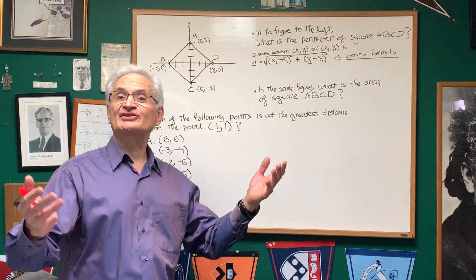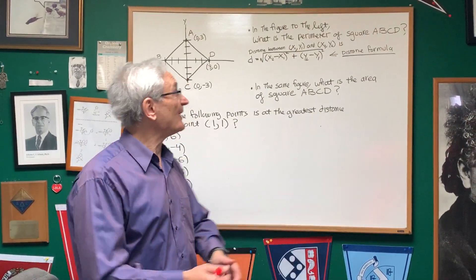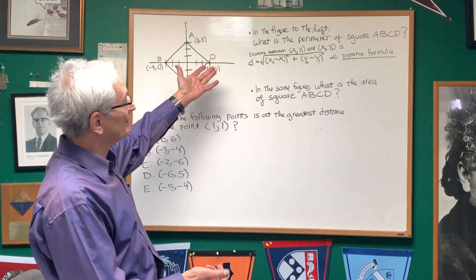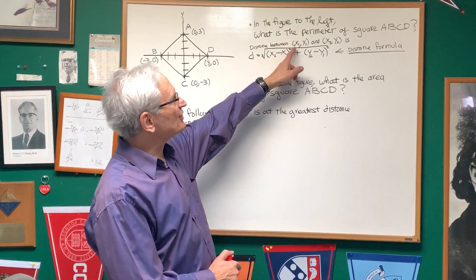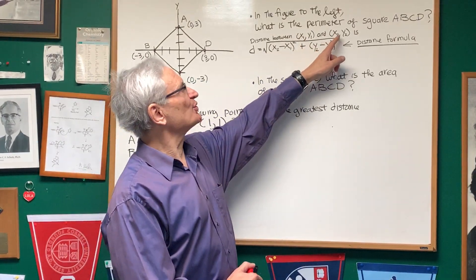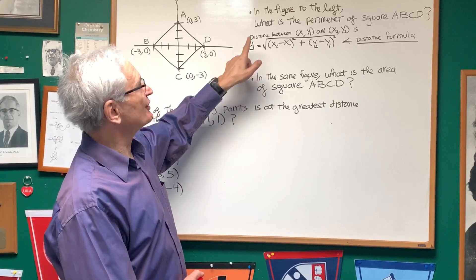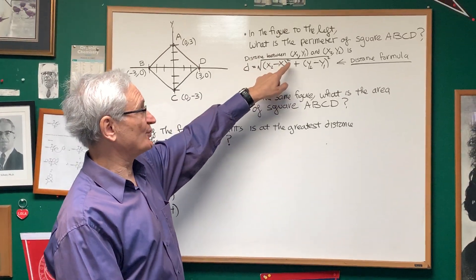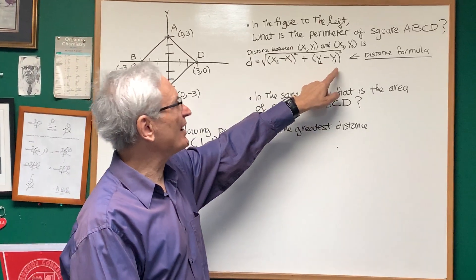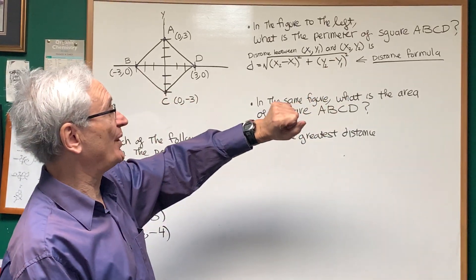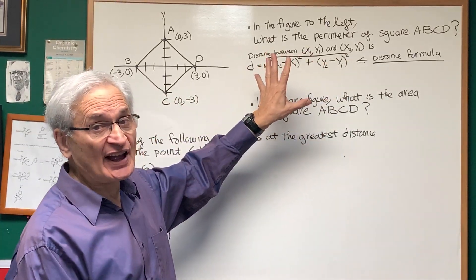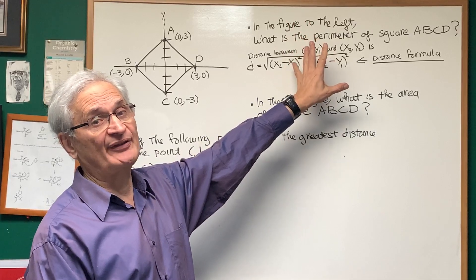Okay, this set of problems has to do with the distance formula. Let's go with the distance formula first. The distance between points x1, y1 and x2, y2 is given by this formula: distance equals the square root of x2 minus x1 squared plus y2 minus y1 quantity squared. So it's the difference between the x values squared, the difference between the y values squared. And here is the problem.